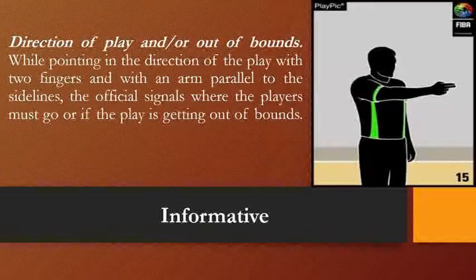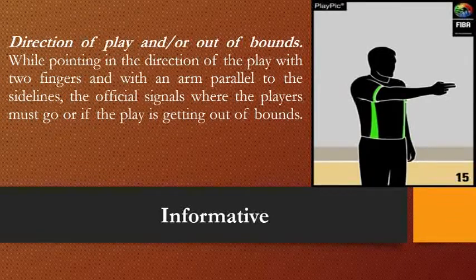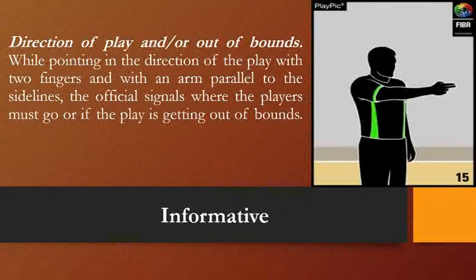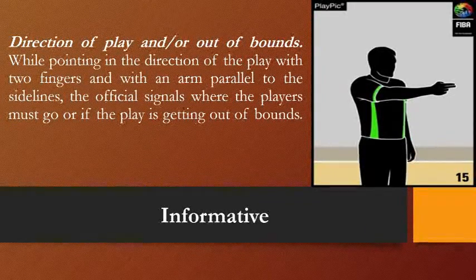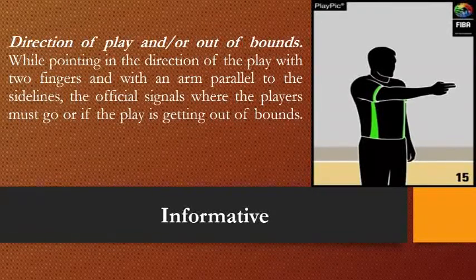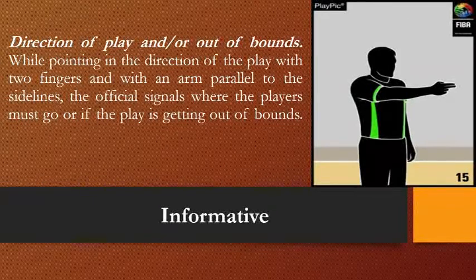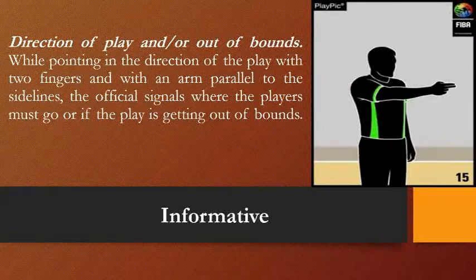Another informative signal is direction of play and/or out of bounds. While pointing the direction of play with two fingers and an arm parallel to the sidelines, the official signals where the player must go or if the player is out of bounds. Direction of play indicates which way the team controlling the ball is heading to the frontcourt, and out of bounds indicates the area where the player will inbound the ball.